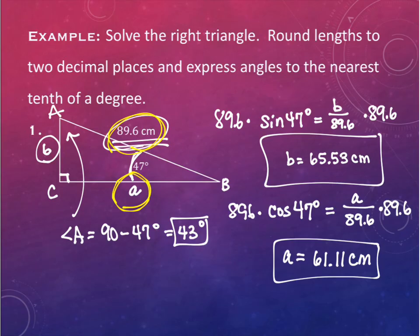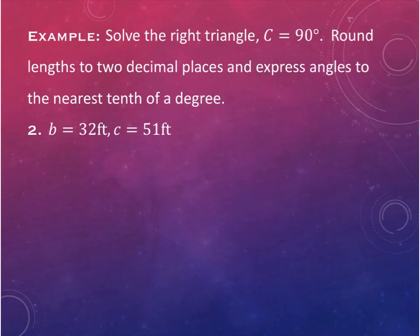Generally speaking, you can be given one of two things: either an angle and a side like the last example, or two sides - and they can be any two sides to work with. I wanted to do an example of both of those types.